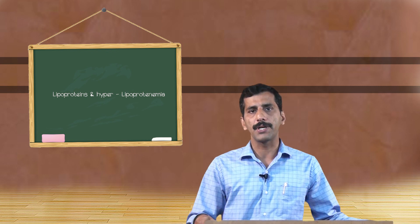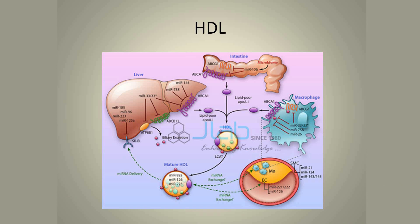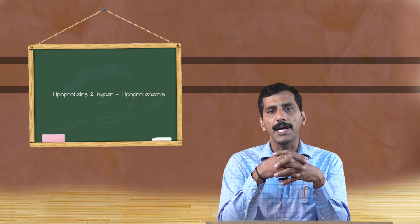Coming to high density lipoprotein. HDL is produced from two different sites: the liver and the intestine. The intestinal HDL does not contain all the apoproteins, whereas HDL derived from the liver has all the apoproteins. Apoprotein A1, which is not present in intestinal HDL, is derived from liver-produced HDL. Both these HDL are rich in cholesterol — liver HDL contains cholesterol synthesized in the liver, while intestinal HDL mainly contains dietary cholesterol.